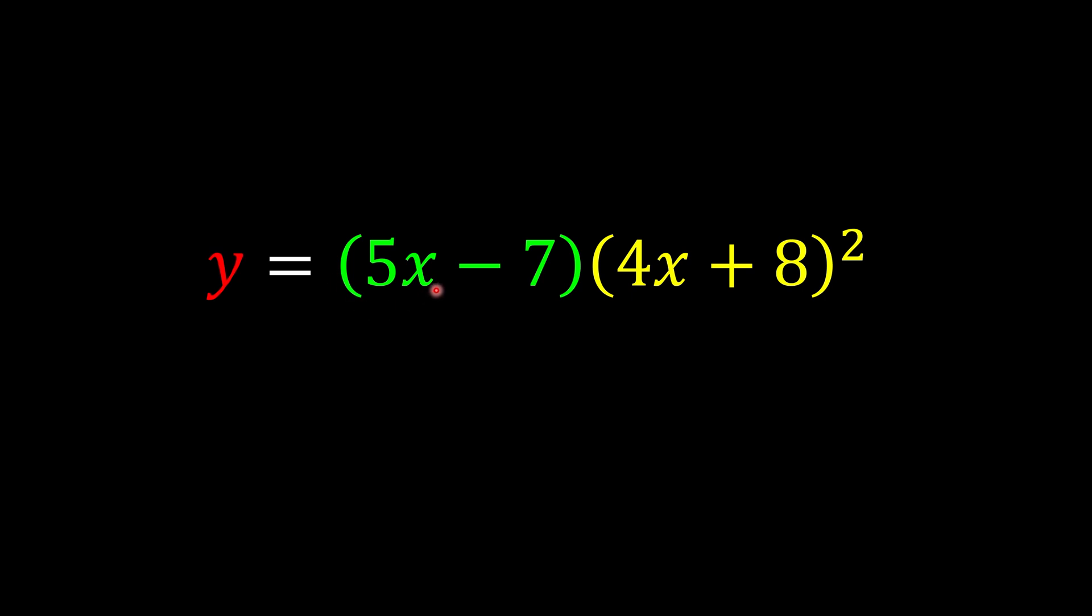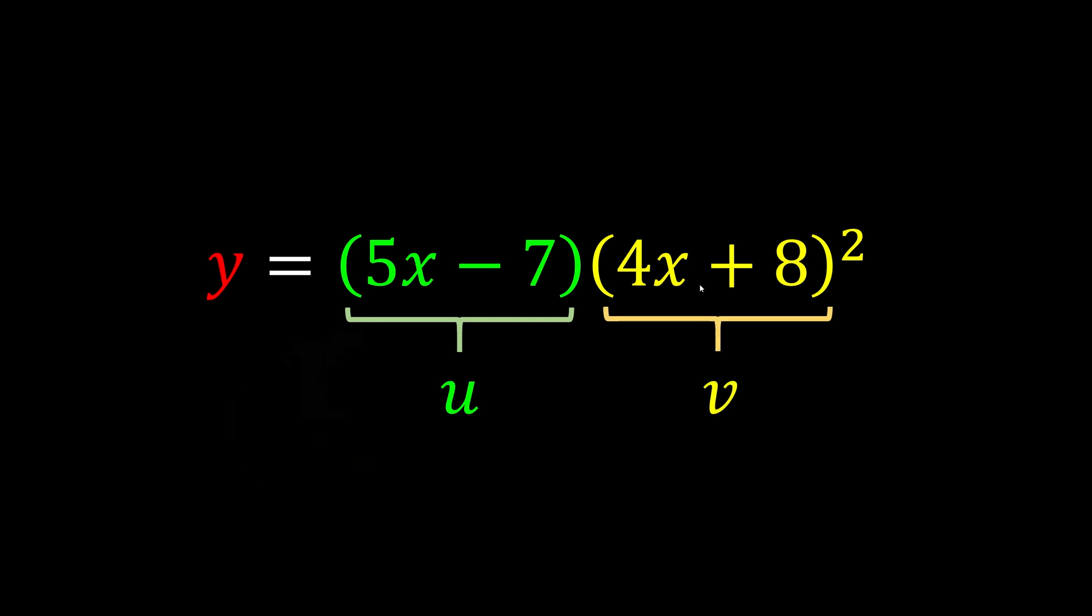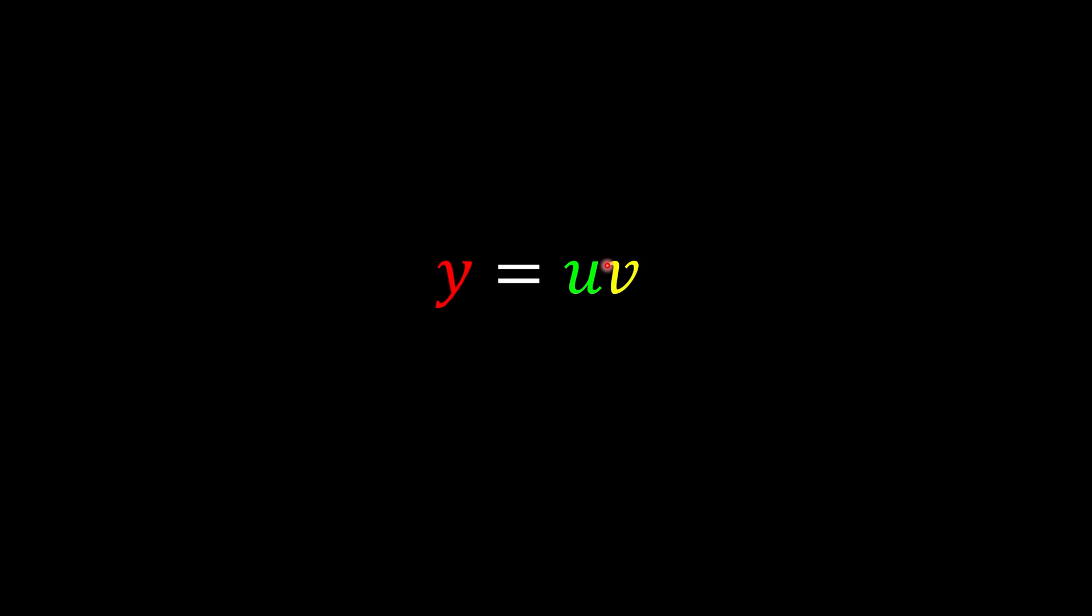Let's call the green color function u and the yellow color one v. So we can simplify this one as y = uv.